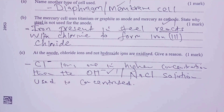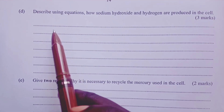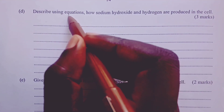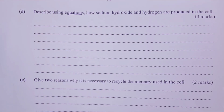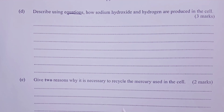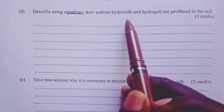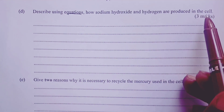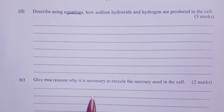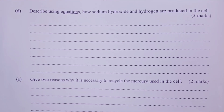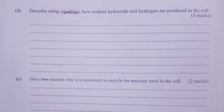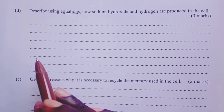Part D asks candidates to describe, using strictly equations and not words, how sodium hydroxide and hydrogen are produced in the cell. We did a video on the mercury cell, whose link we shall share in the description. When you go through that video, this question would be very easy to answer.